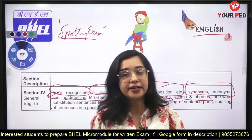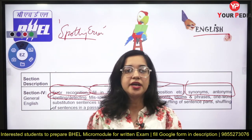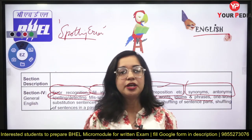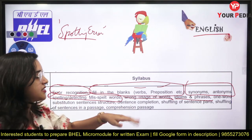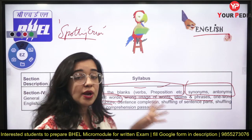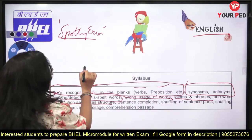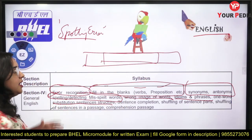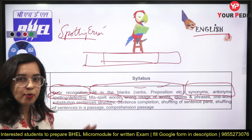Next is idioms and phrases. We are already completing phrasal verbs; a lecture on important idioms is coming very soon. After that is one word substitution and sentence structure — in these questions a complete sentence is given, a part is highlighted, and you have to replace it with the best single word from four possible options.